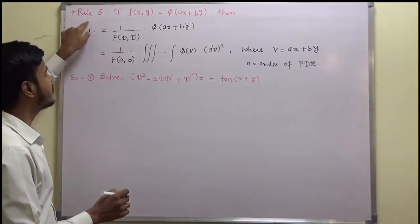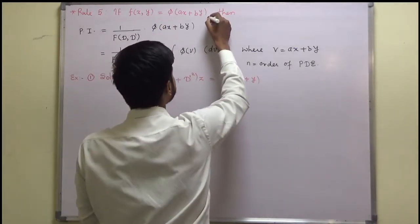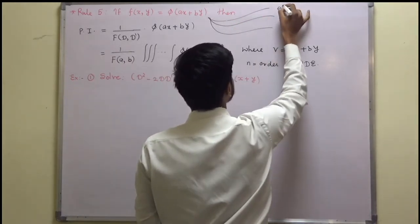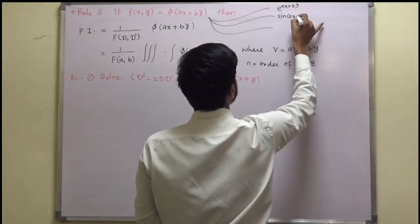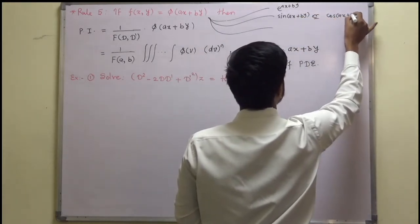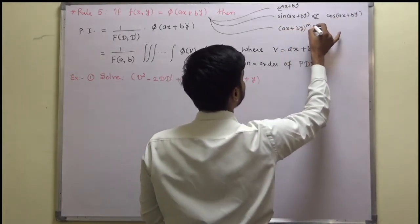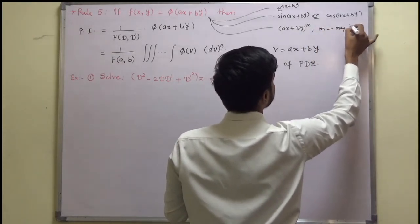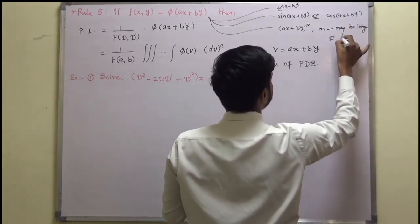What does rule number 5 say? If you have f(x,y) equal to phi of (ax + by), this ax + by can be anything like e to the power (ax + by). It may be sin(ax + by) or cos(ax + by). It may be like (ax + by) to the power m, where m may be an integer or a fraction.